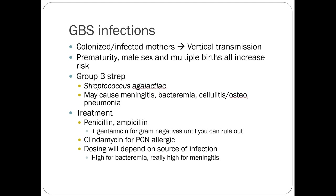Any kid with a fever or something growing on gram stain should be treated quickly — nosocomial bacteria can proceed to sepsis, meningitis, or pneumonia rapidly. Group B strep: colonized mothers can cause vertical transmission; prematurity, male sex, and multiple births all increase risk. It can lead to meningitis, bacteremia, cellulitis, osteomyelitis, and pneumonia. Treatment: penicillin or ampicillin works great; add gentamicin for gram-negative coverage until ruled out. Gentamicin is preferred in kids over adults because renal damage concerns are less pronounced in pediatric patients.